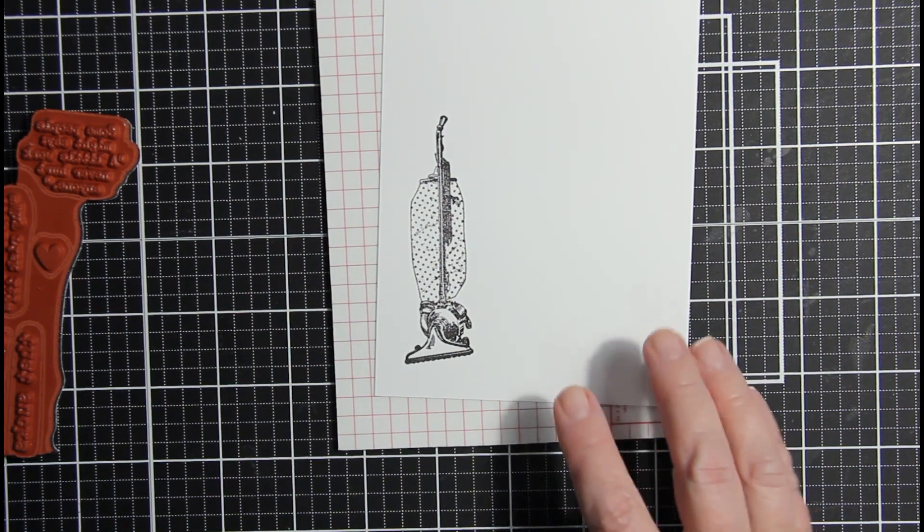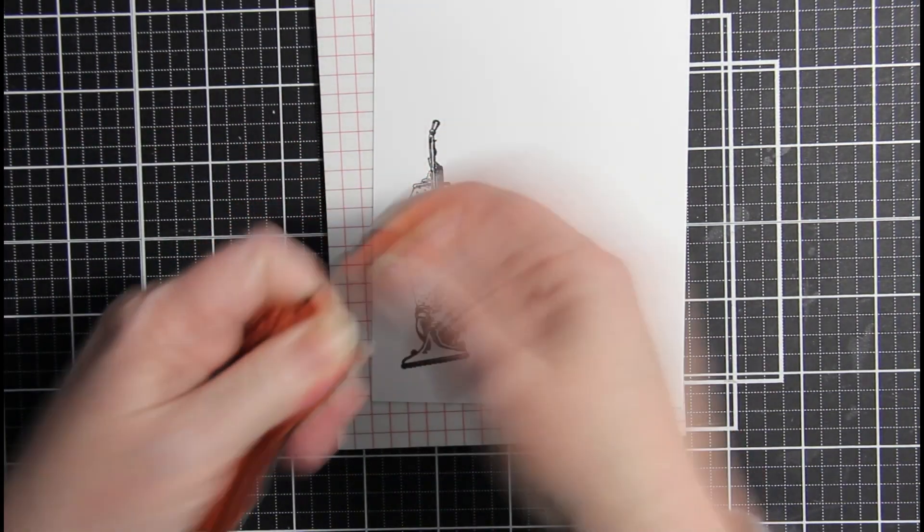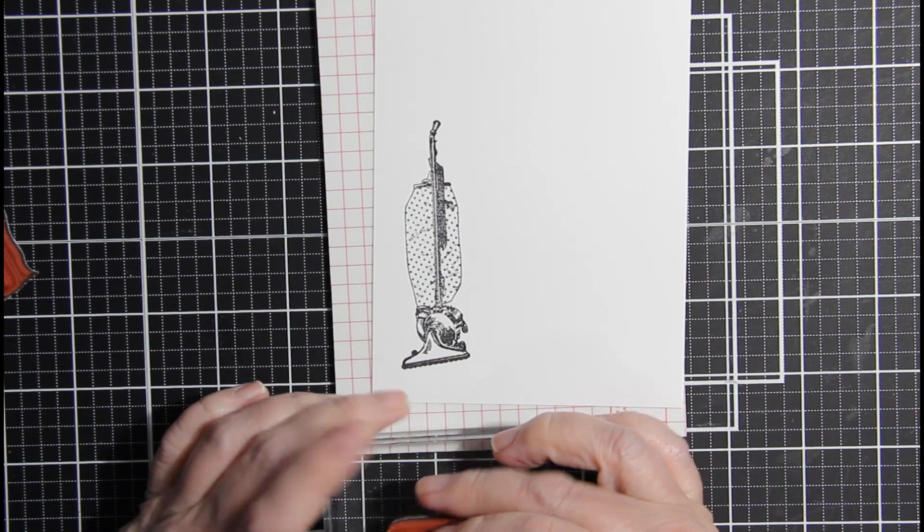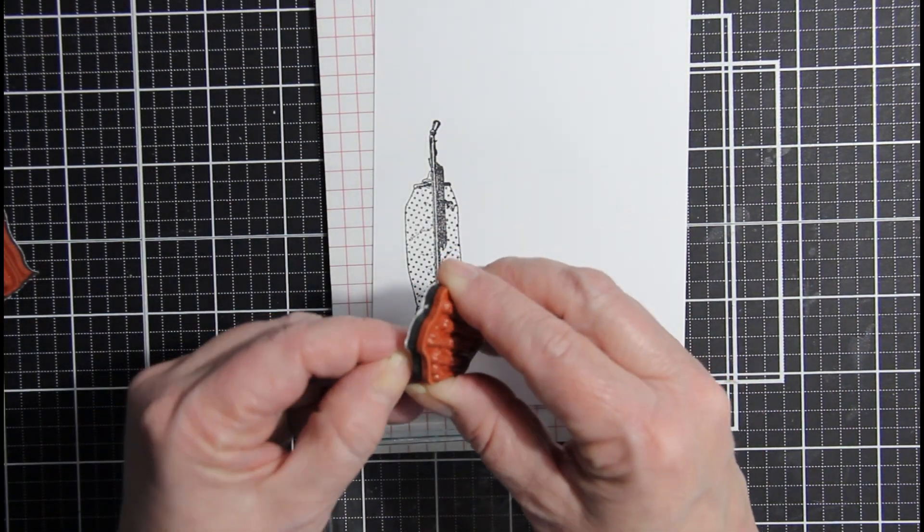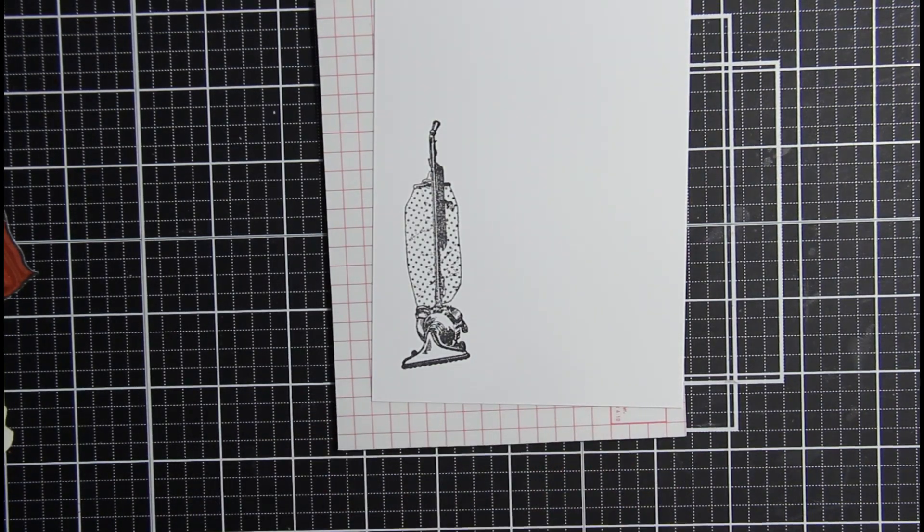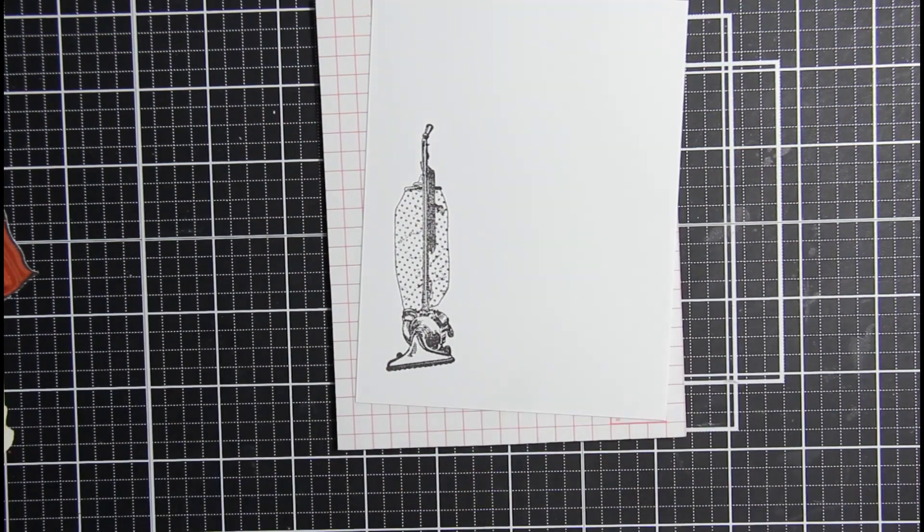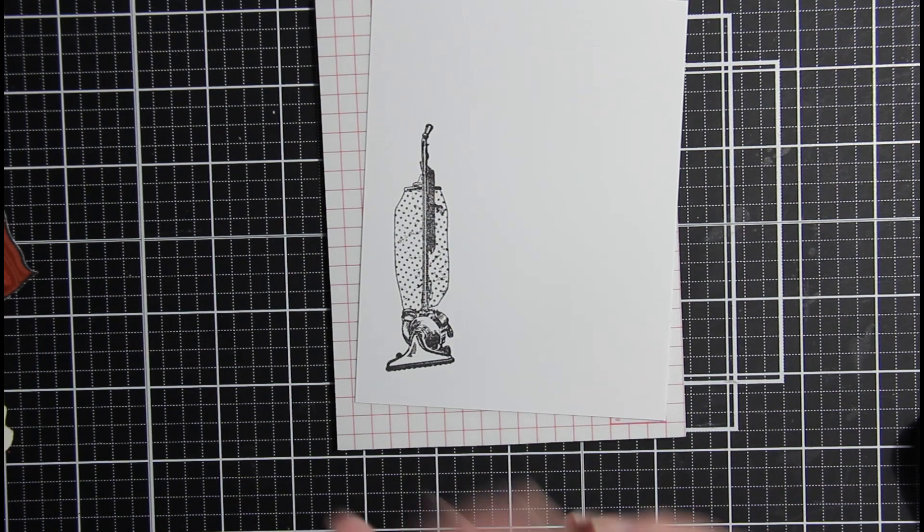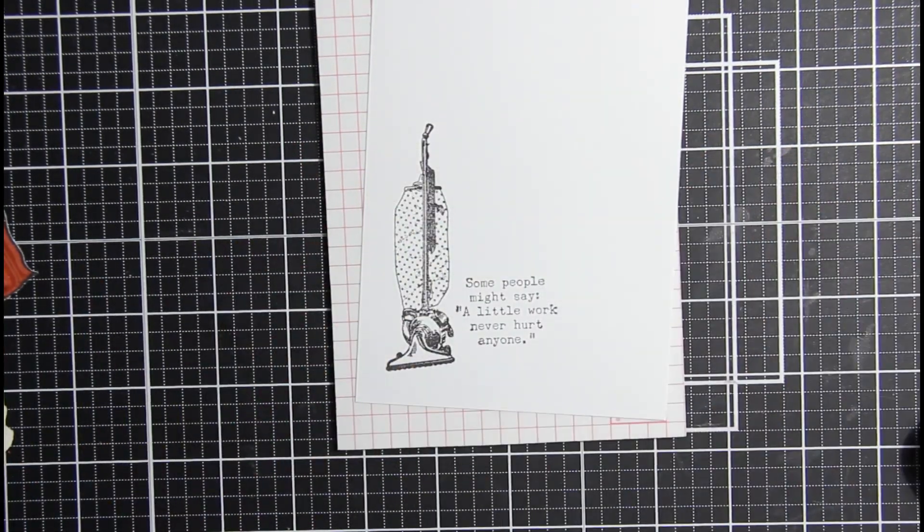Now, the next thing I want to do is I want to use the stamp saying. So, I'm going to use the stamp saying that says, Some people might say, A little work never hurt. And I'm going to put that next to the vacuum cleaner. And there we go.